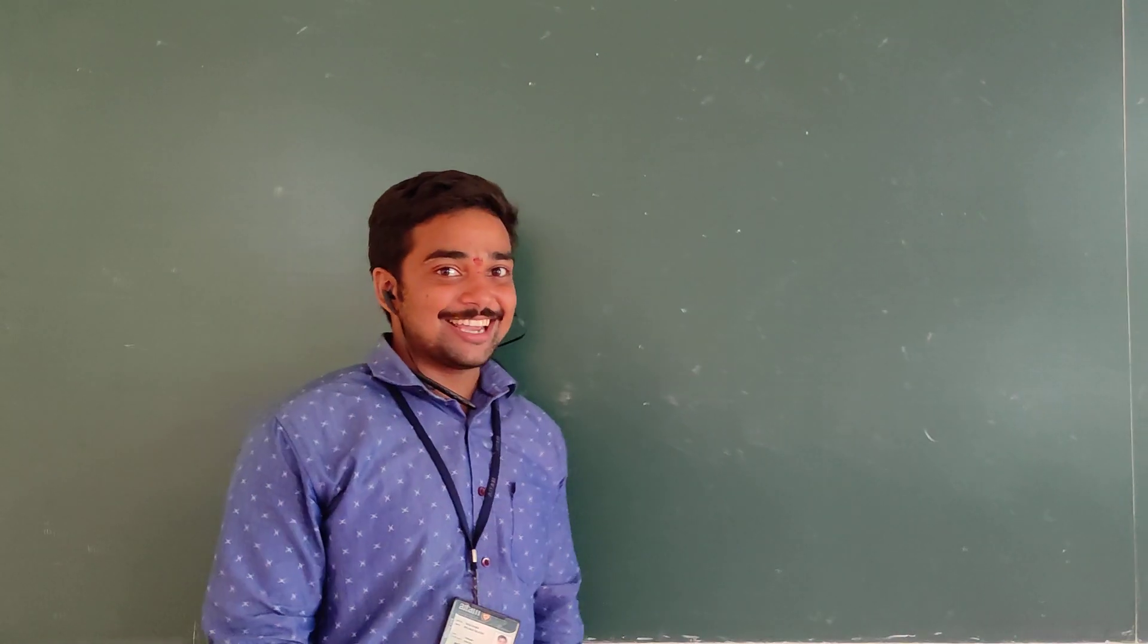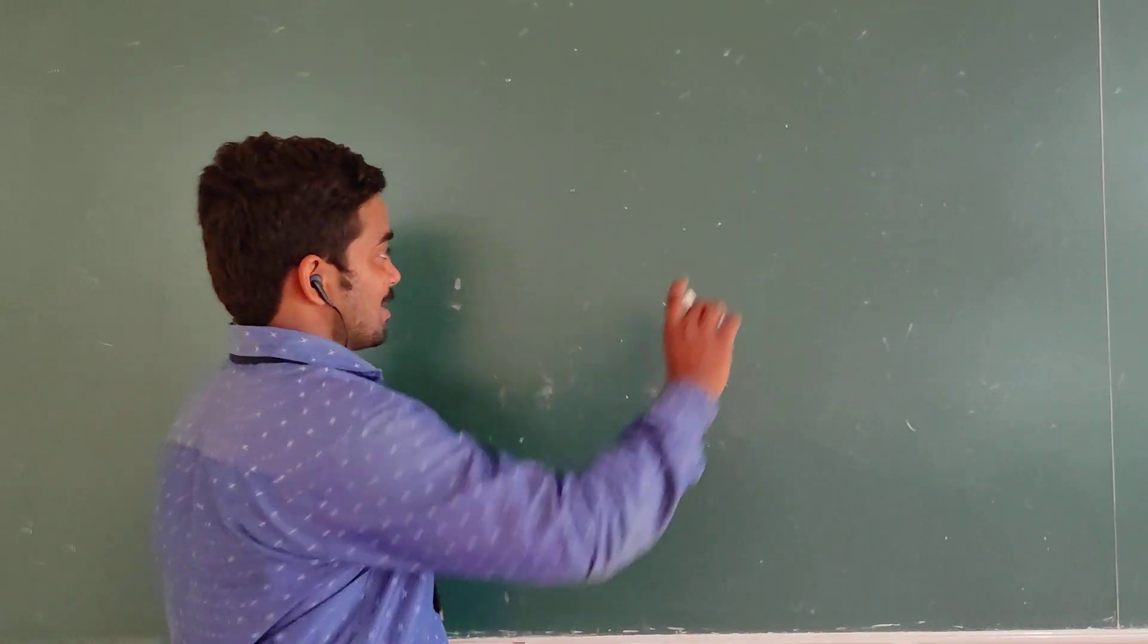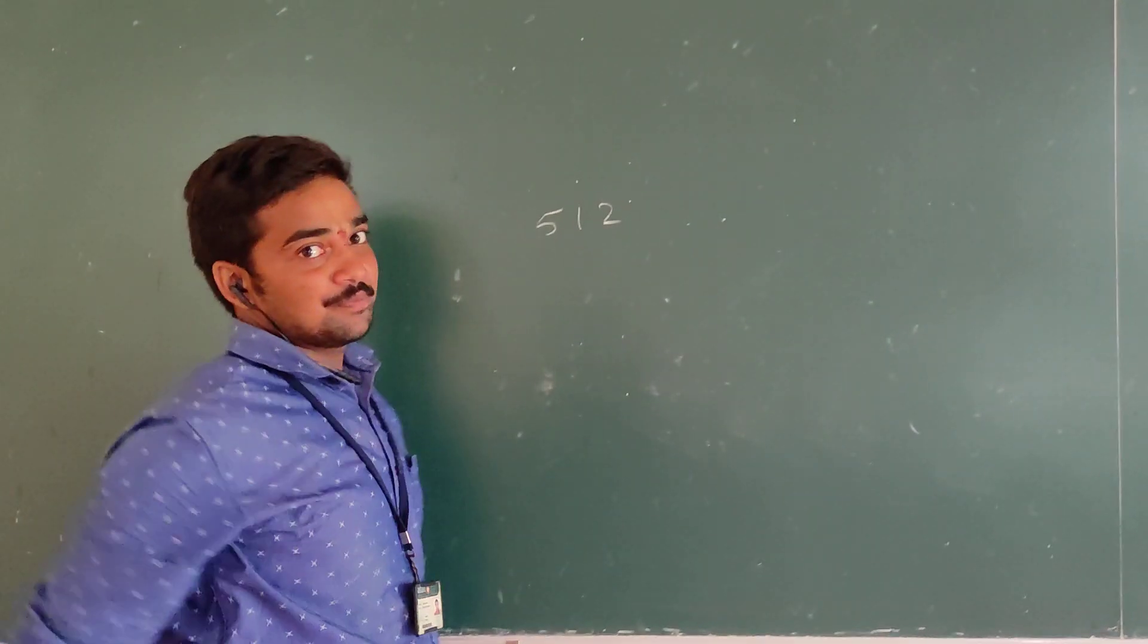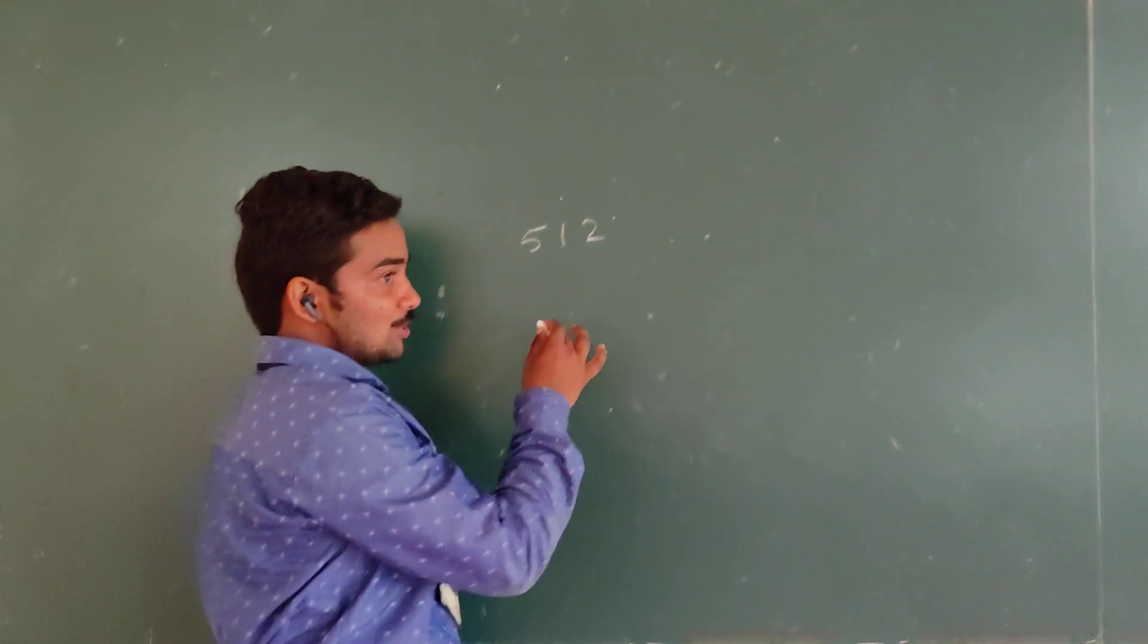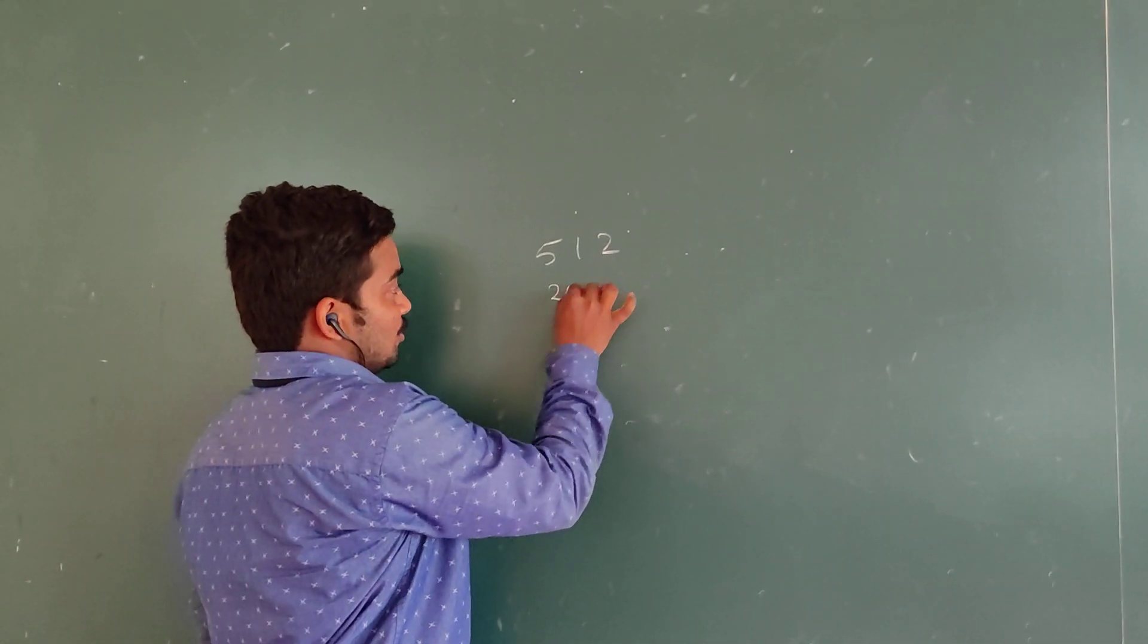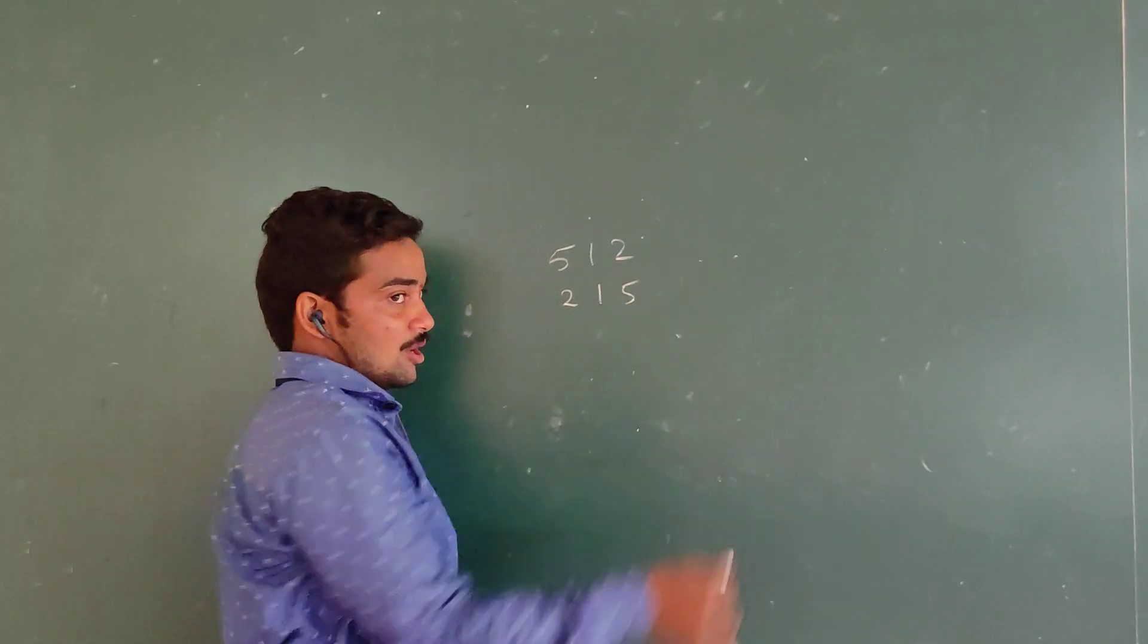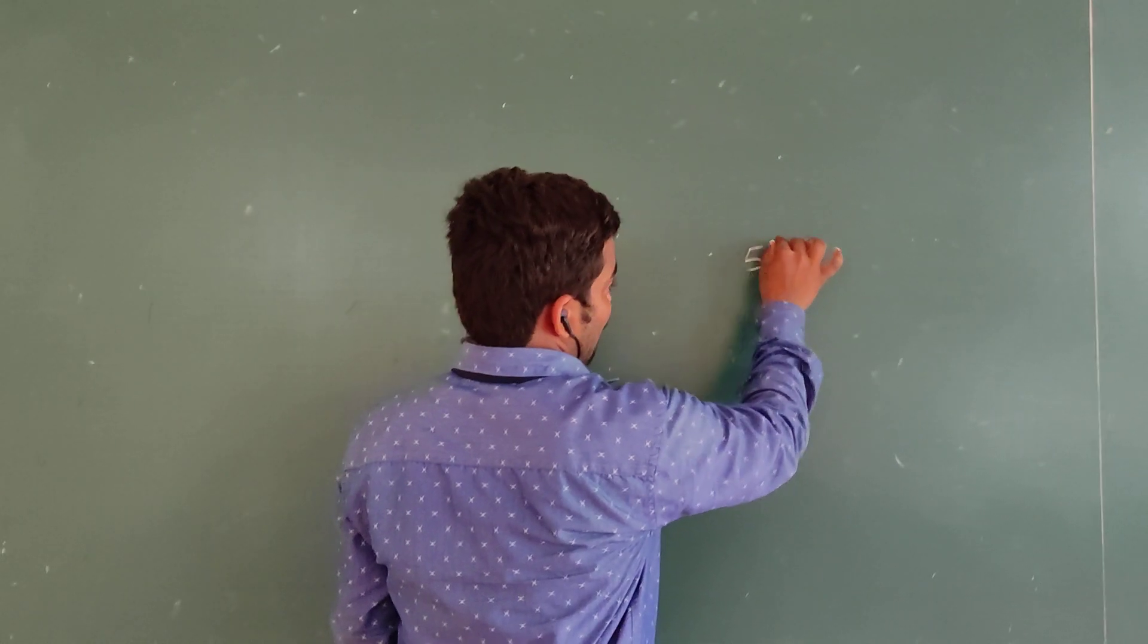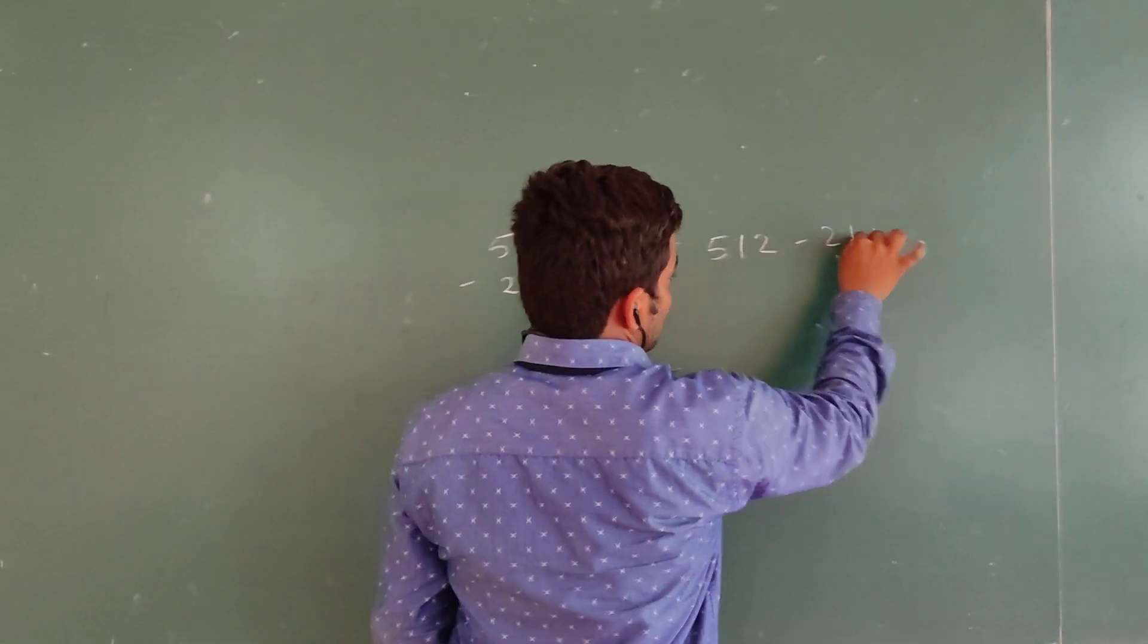Let me take any three-digit number. For our convenience, I will take 512. Now, I am going to reverse this number: 215. Now, I am going to subtract. For this, 512 minus 215.